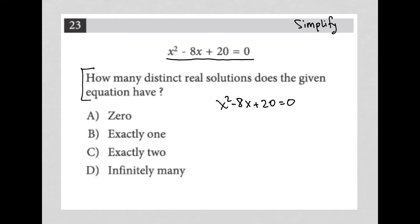I just need to simplify this. I'm going to start off with seeing if there are two factors of 20 that add up to negative 8. There actually are not. Let's see, 10 and 2 would be 12, negative 4 and negative 5 would be negative 9. There are not.